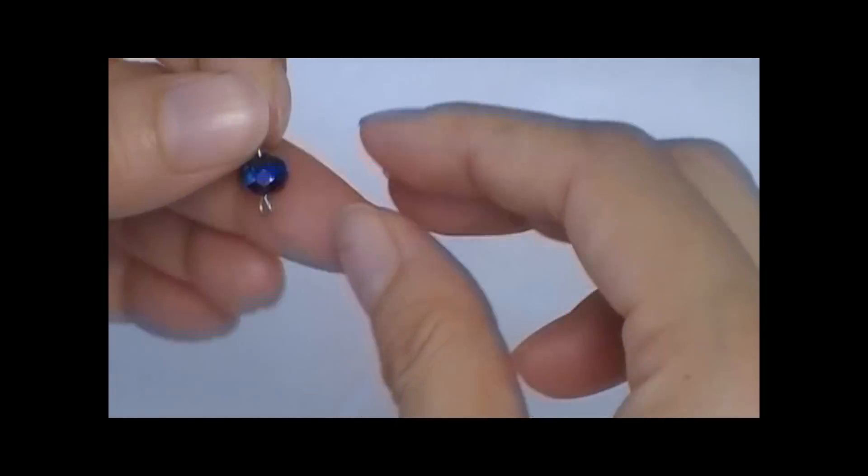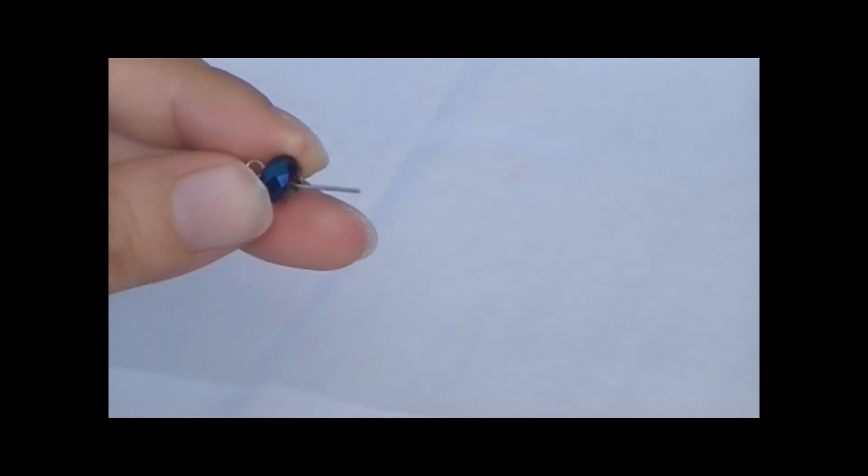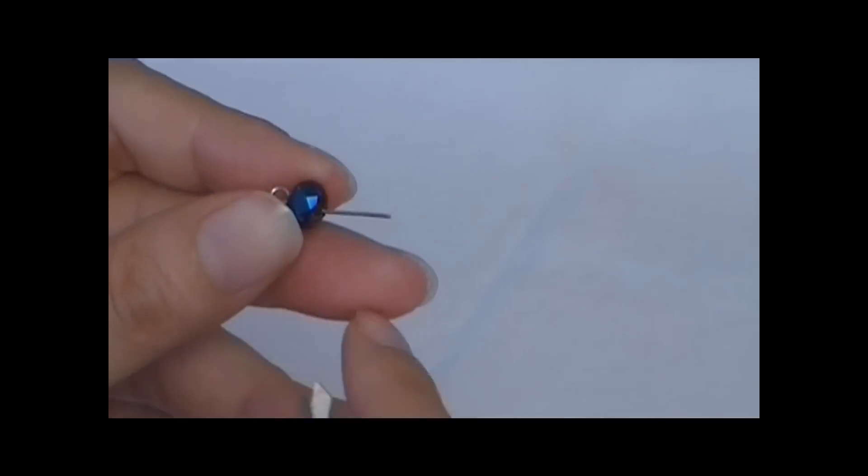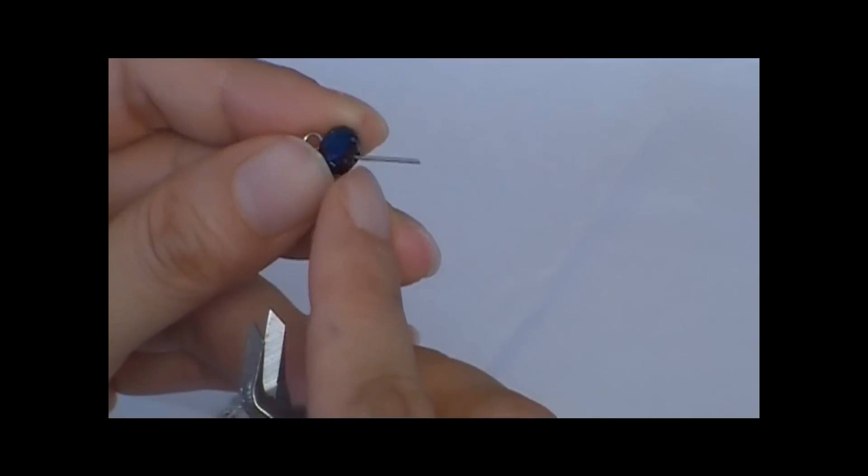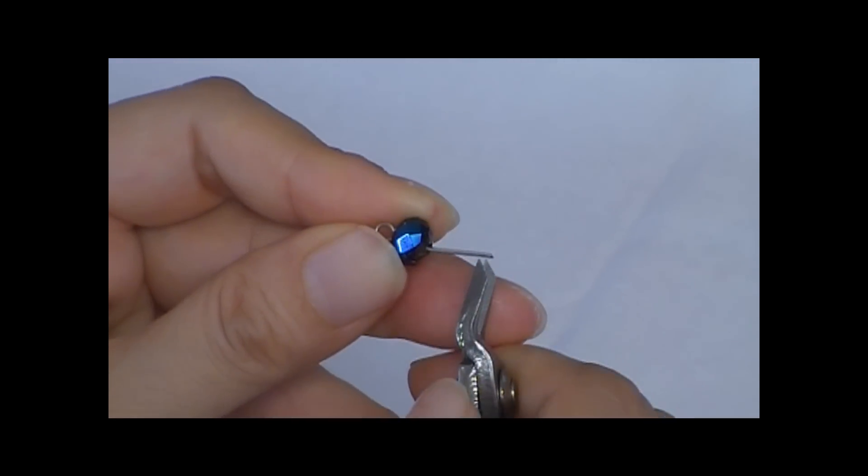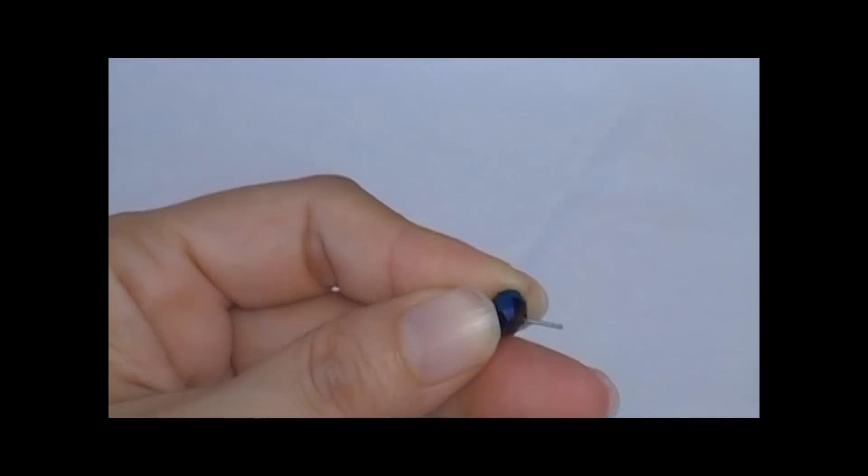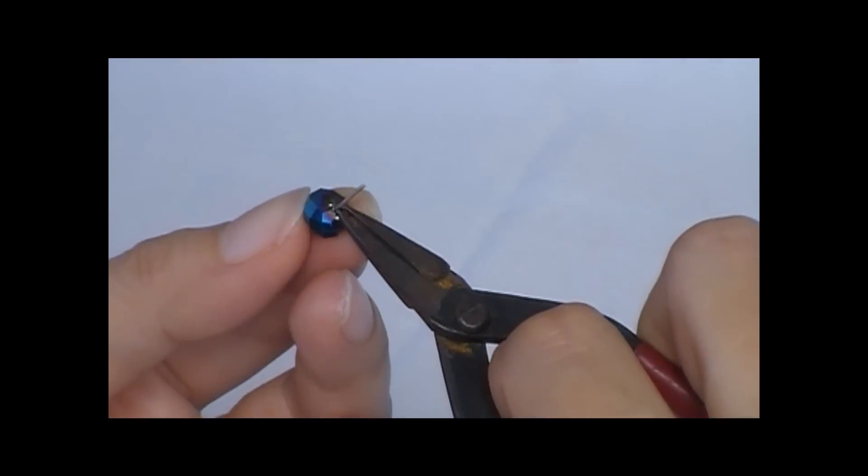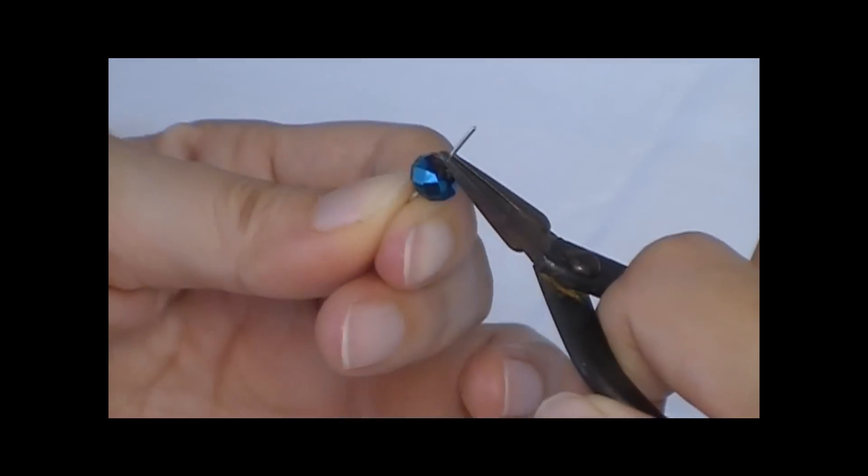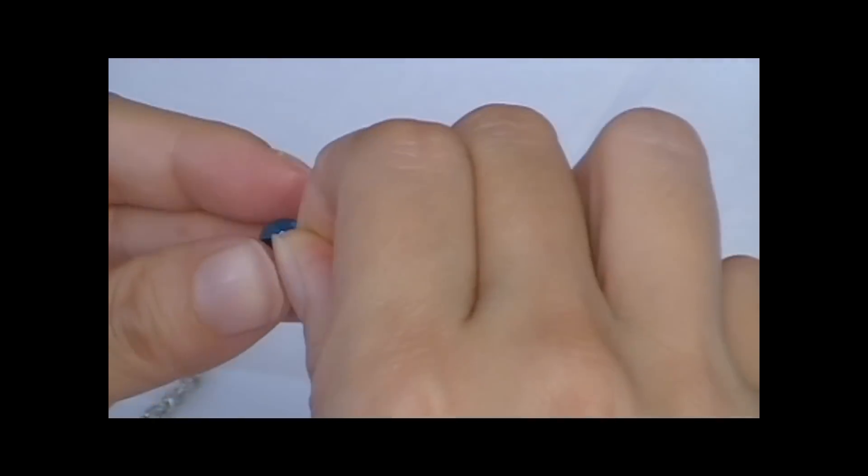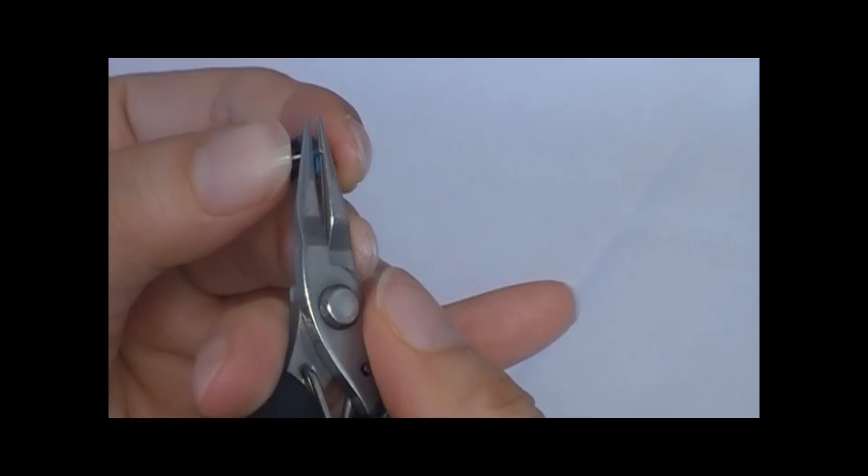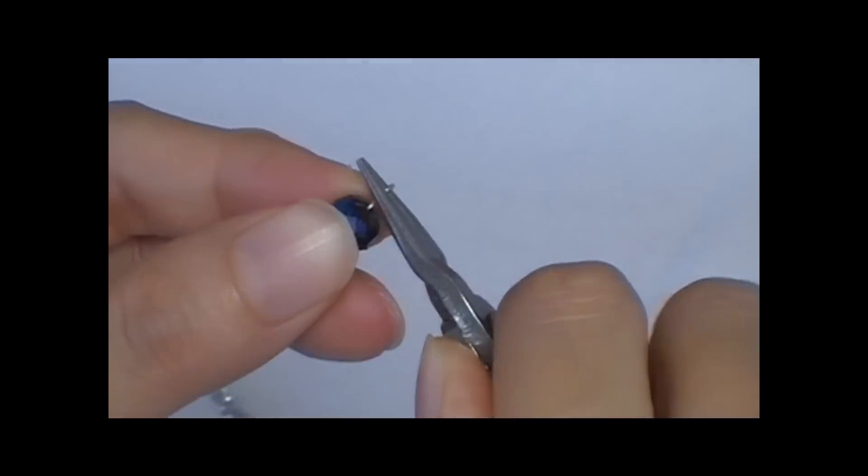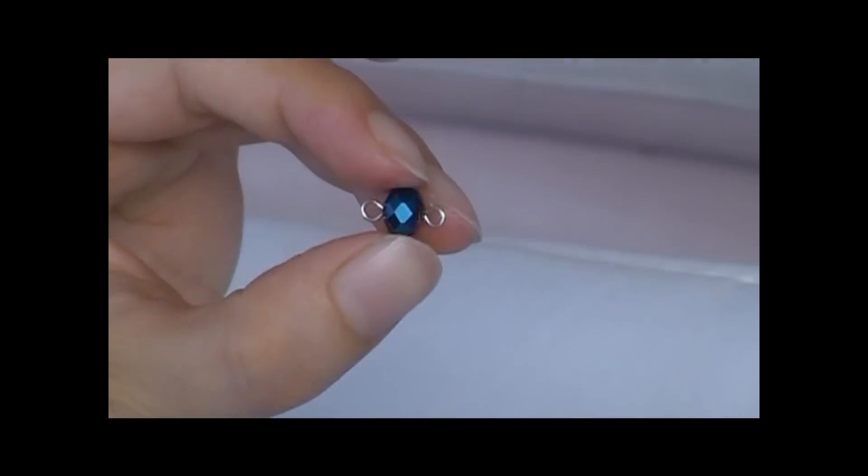Now turn it to the other way around. Repeat the same process to make the second loop. Before that, I need to ensure that this is around 0.8cm. So I'm going to cut off excess wire using the wire cutter. And using a pair of flat nose plier, I'm making a 90 degree bend. And now I'm going to make a loop. See? Now you have two loops completed for the bit.